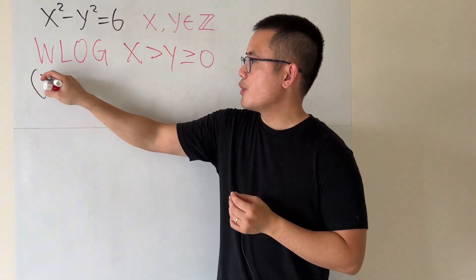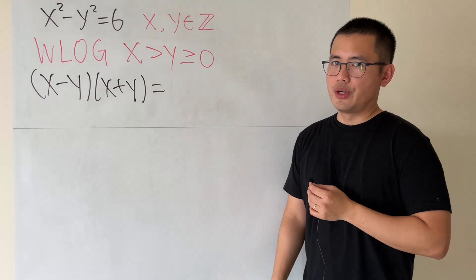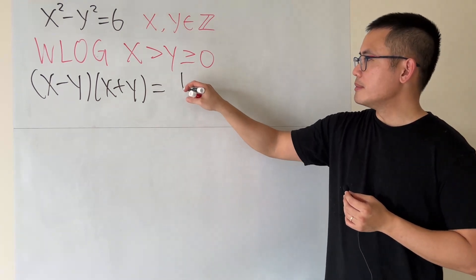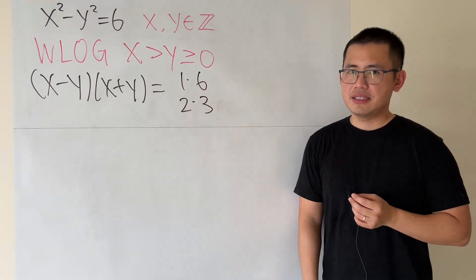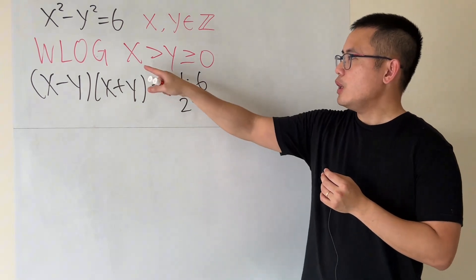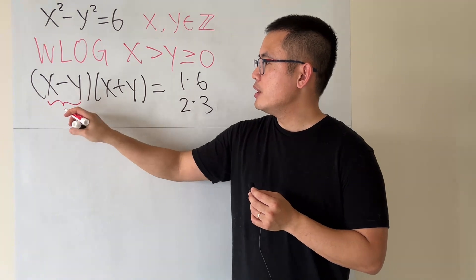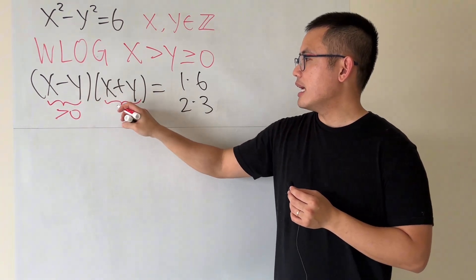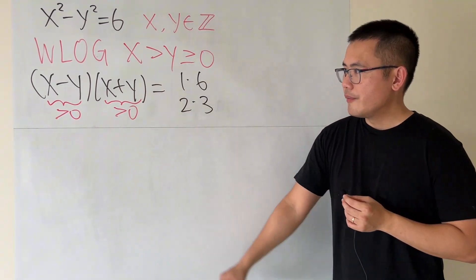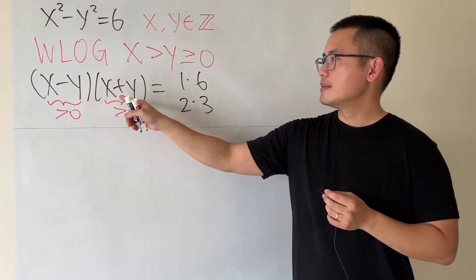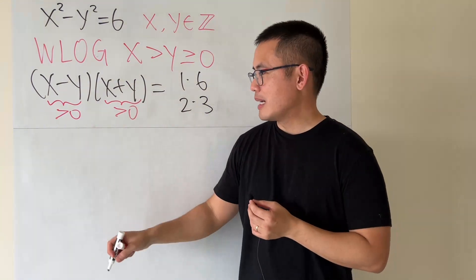And then let's factor out the difference of two squares. x minus y, x plus y, and for six, we can also break it down. Either one times six or two times three. And you might be wondering, how about negative one times negative six? It's possible, but here I have this condition. So that means x minus y must be greater than zero. Likewise, this has to be greater than zero. So we're just focusing on the positive pairs. Now, x minus y has to be smaller than x plus y. Let's just come up with some conditions.